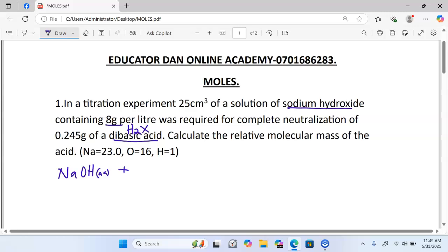plus a solution of the dibasic acid. And this one is going to give us a salt of sodium, which is Na2X. It can be aqueous or a solid, plus of course water, since the reaction between an acid and a base will always give us salt and water. We can balance the equation by writing two behind sodium hydroxide.